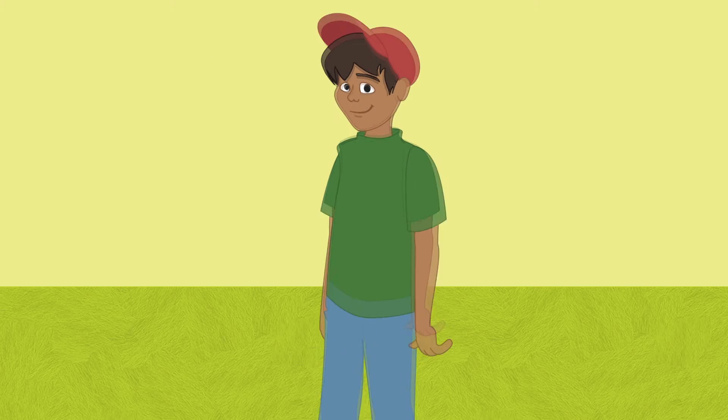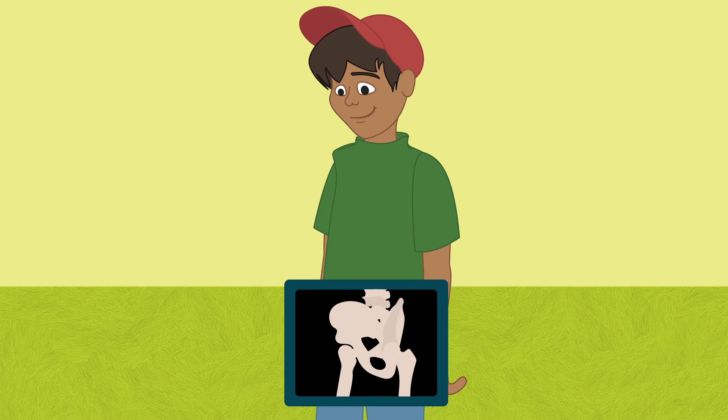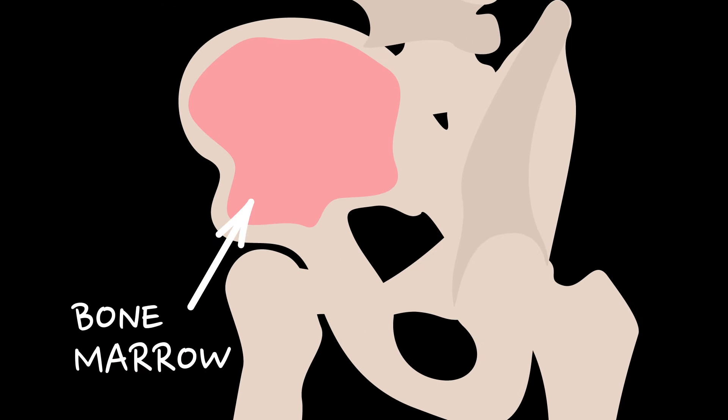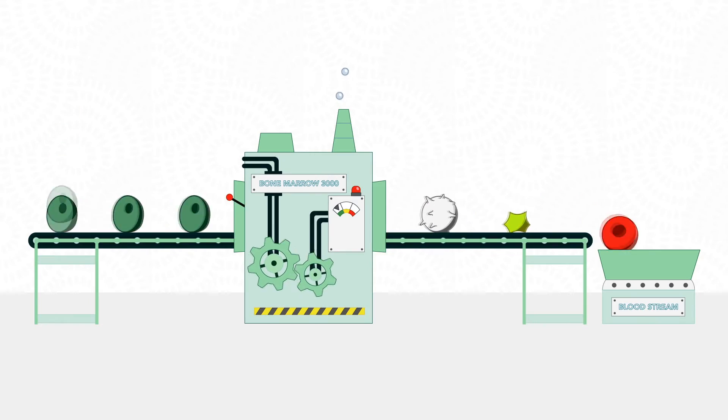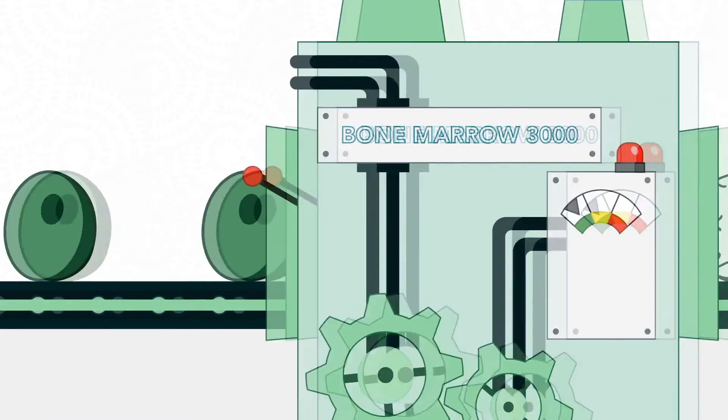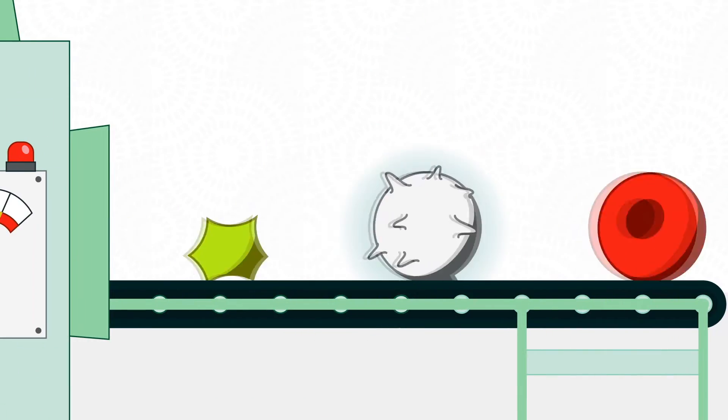Blood cells are made through a special process inside your bones in a soft and spongy material called bone marrow. Bone marrow is like a factory that builds cells. These cells come out as red blood cells, white blood cells, or platelets.